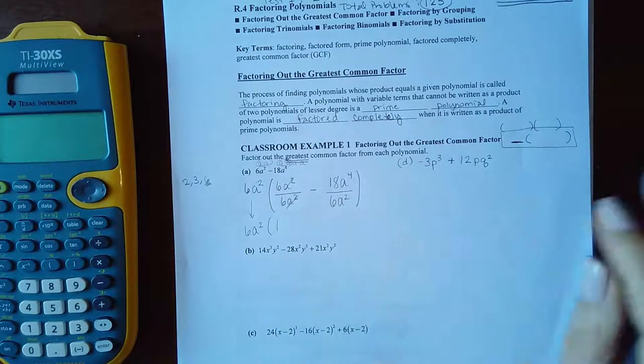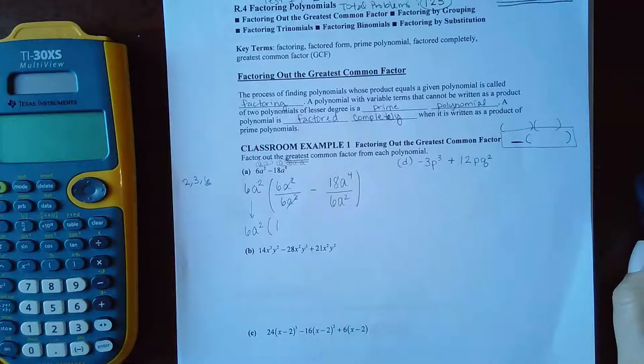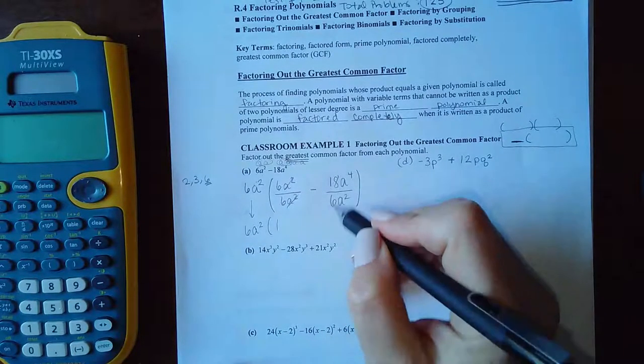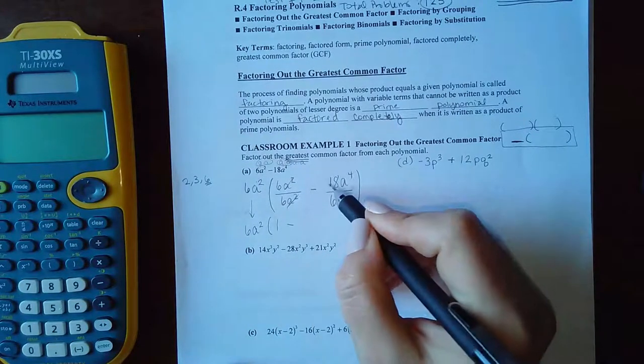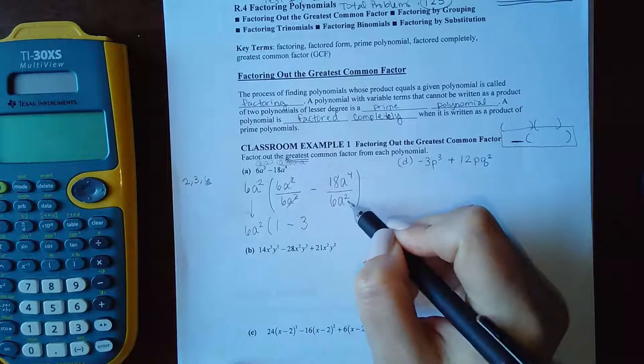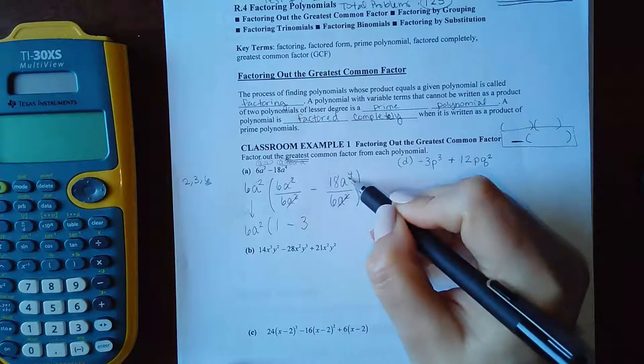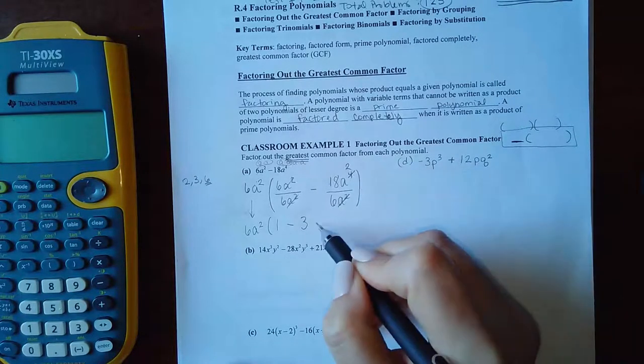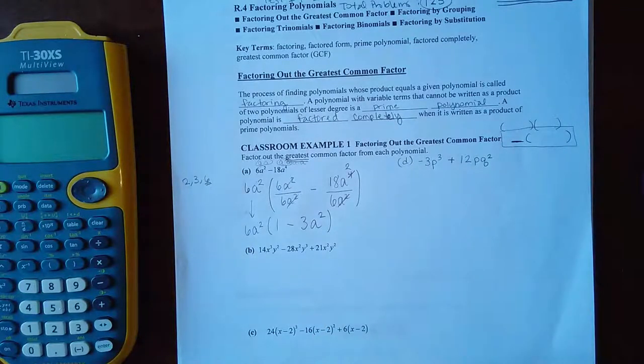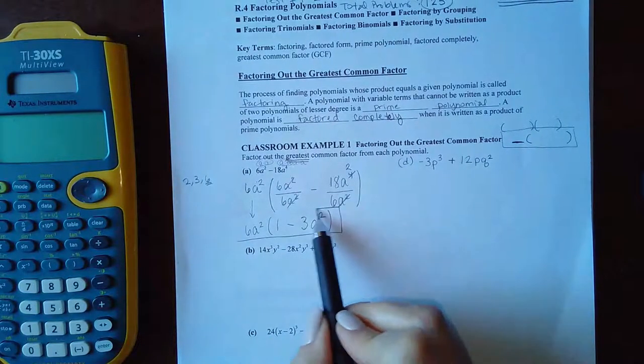Here's the monomial that I chose to factor out, and the results here will be the remaining polynomial. So six divided by six is one. A squared will cancel with A squared. And then here, I'm going to bring down my minus sign. 18 divided by six is three. And A to the fourth and A squared, two of the A's will cancel with two of those, leaving me with two left. So I have A squared left.